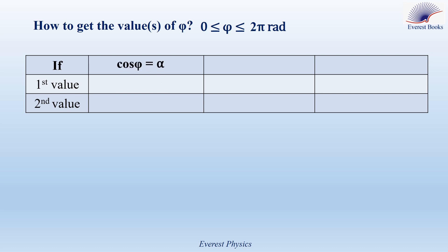First case: if cosine phi is equal to alpha, then the first value of phi can be given directly using the calculator by pressing shift cosine alpha, so the calculator gives you the first value phi1. But the second value of phi cannot be given using the calculator; this value is equal to minus phi1. So phi1 and minus phi1 are the values of phi in this case.